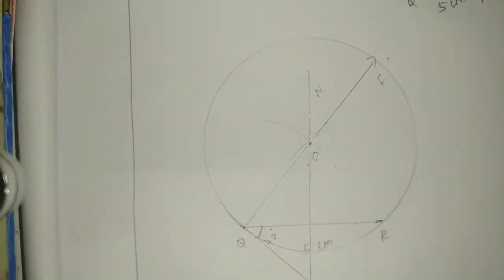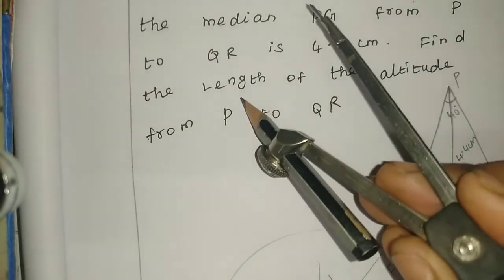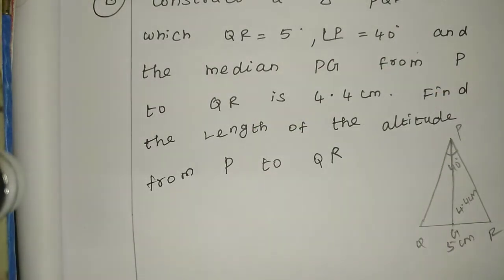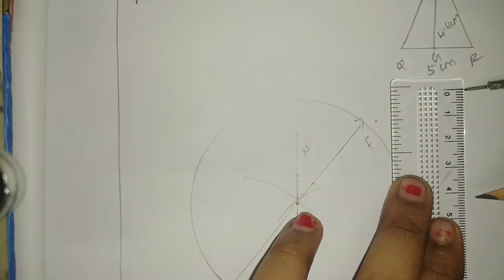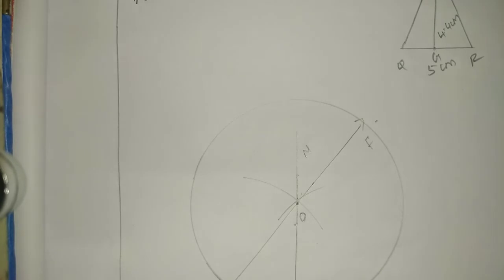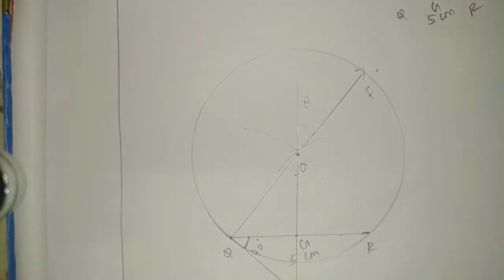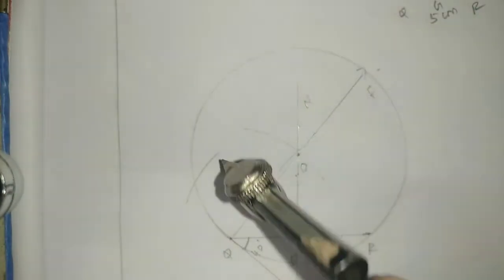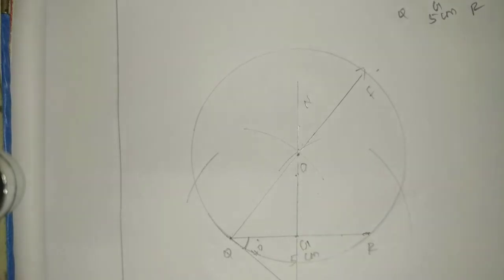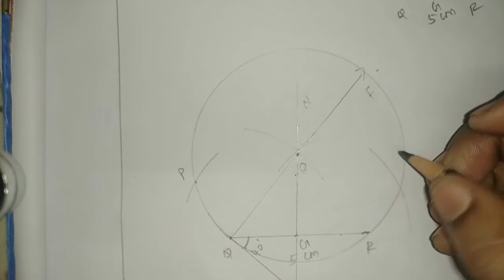Now we can draw the median using 2 arcs. The median is 2 arcs — correct. This is P, and G is from P. The median PG from P to QR is 4.4 cm. So the scale is 4.4 cm. Here is G, and this is the part G. Now we can mark G here at 4.4 cm. The opposite side is cut with 8 arcs.